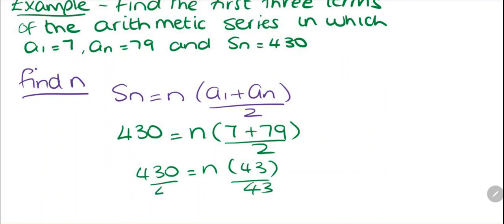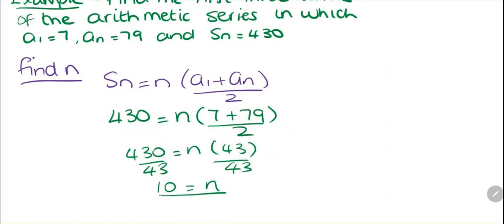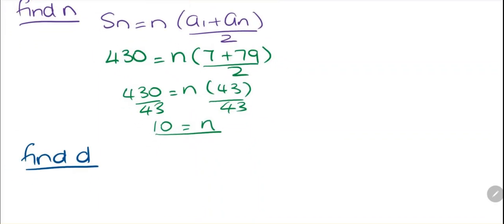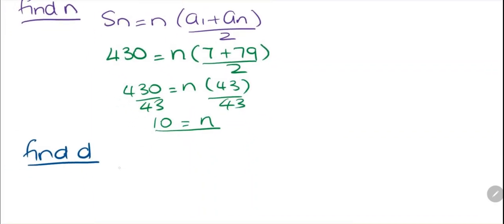Dividing both sides by 43, n is equal to 10. Now we've found the value of n, we need to find the common difference d. To find d, we're going to use the formula for the nth term: an = a1 + (n − 1) × d.